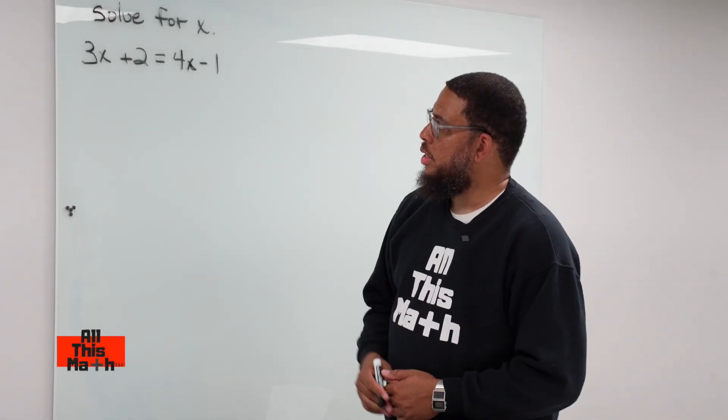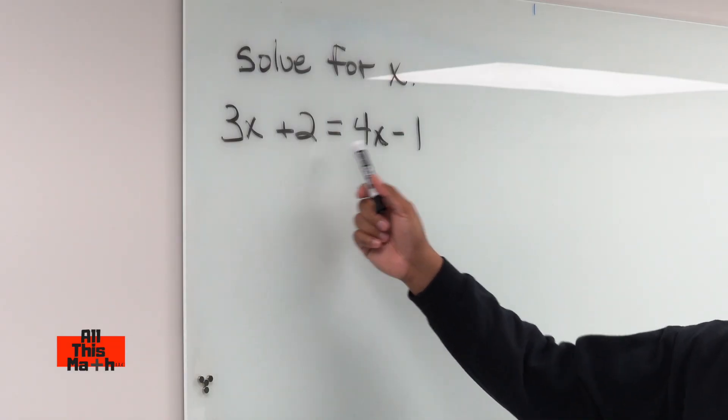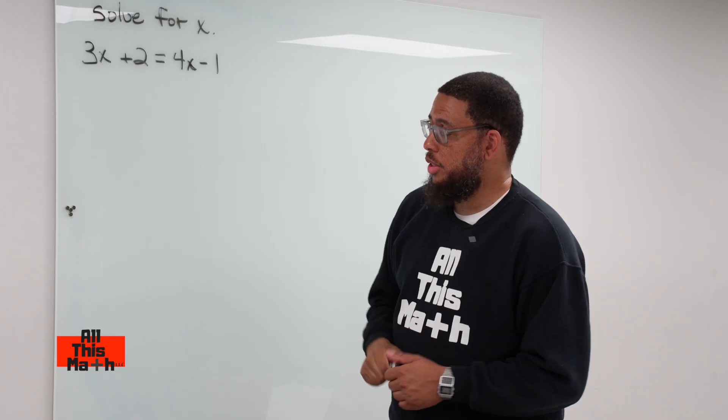Welcome back to All This Math. This is Professor Parker, and now we're doing a little bit of algebra. We have an equation up here. We're going to solve for x. Our equation is 3x plus 2 is equal to 4x minus 1, and we want to solve for x.